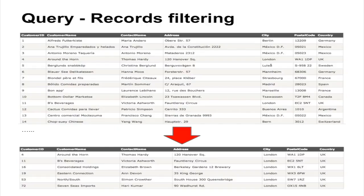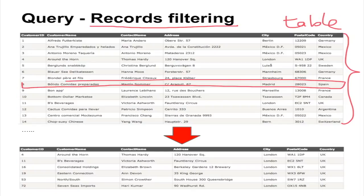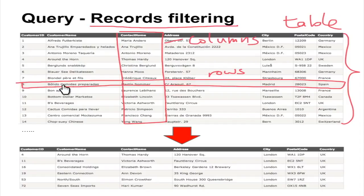Here we can see an example of a query where we are performing records filtering. We have a large table, and we call these rows — the records in a table. We also call these the columns or the fields of the table. The rows store all the related information of a particular customer: customer ID, customer name, contact name, address, city, postal code, and country. Each row or record has the same structure in the table.